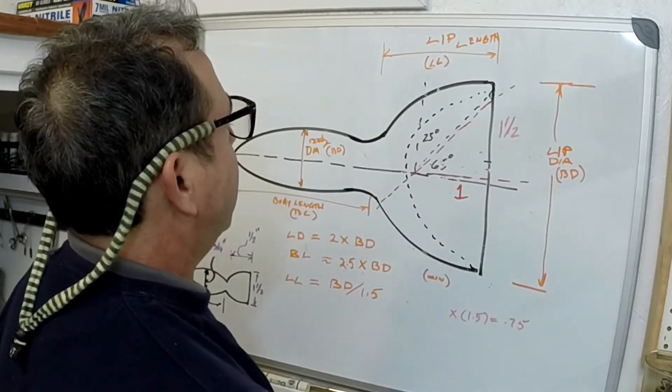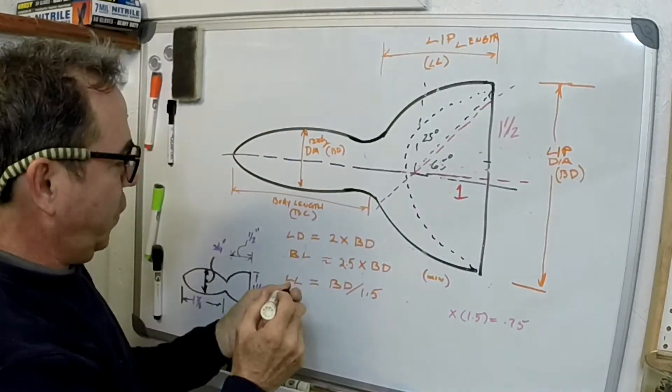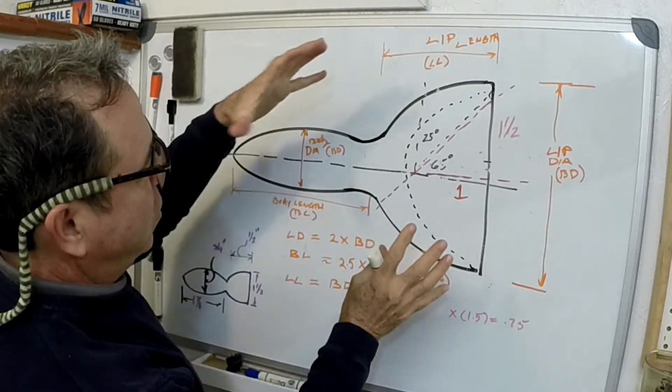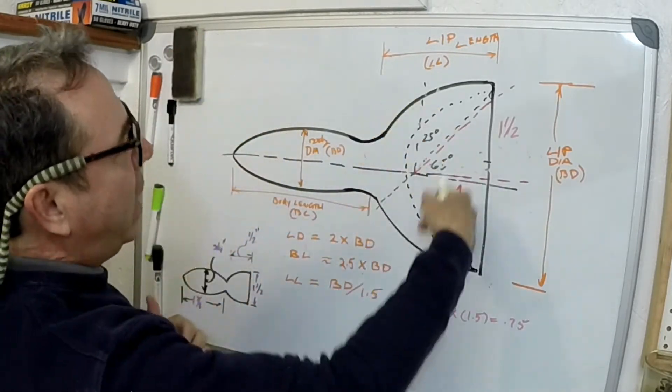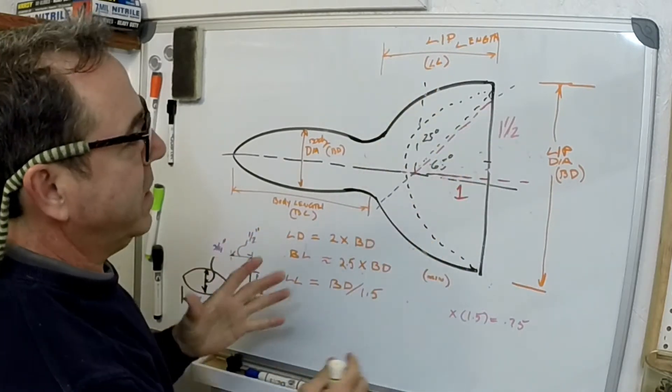Now these dimensions that I'm going to give you are kind of nominal minimums so that you get enough meat to carve out what you need. You can make them a little bigger, you can make the bells a little bigger, because you can always diminish the size.